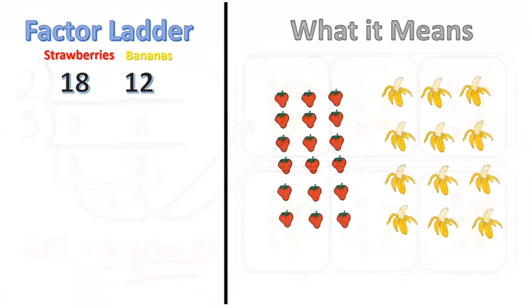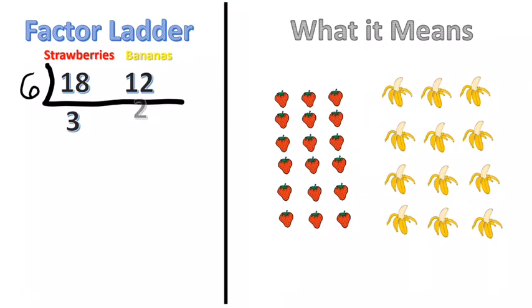Now let's look at this example start back over, same example but let's say you looked at 18 and 12 and you automatically thought well I know that 6 goes into both. I can divide 18 and 12 both by 6. So when you divide 18 by 6 you get 3 and when you divide 12 by 6 you get 2. Now you can't divide 3 and 2 anymore so the factor ladder is over. The GCF, the greatest common factor, is that number that you picked.